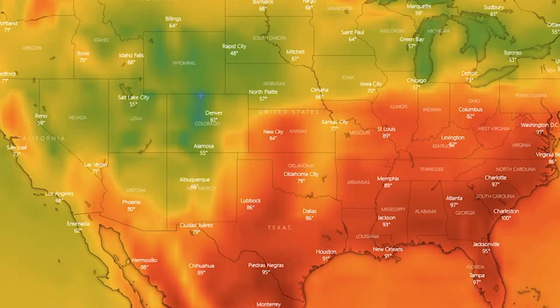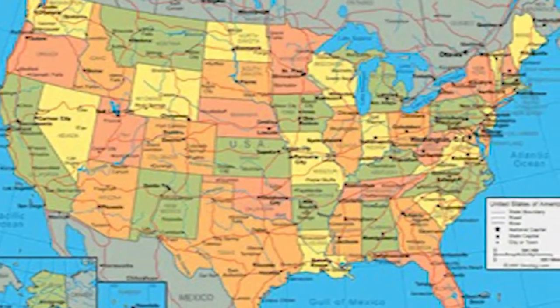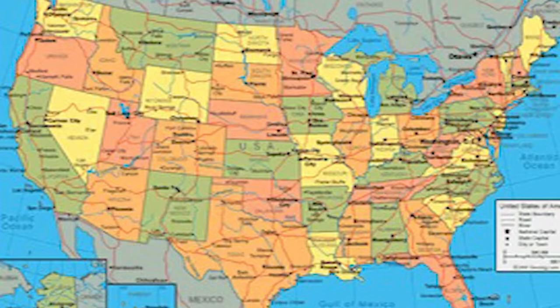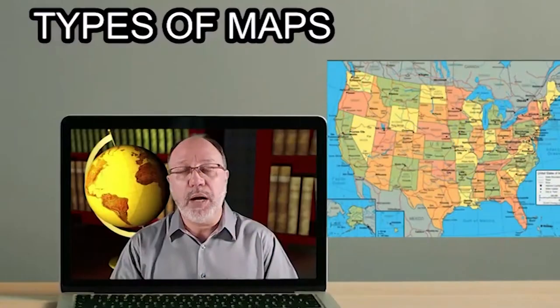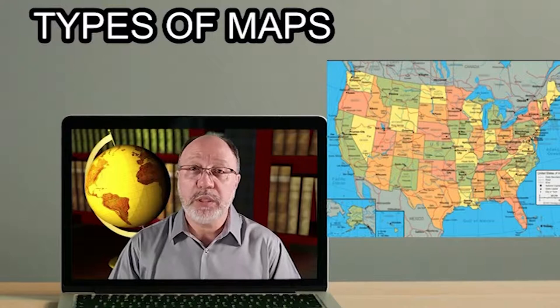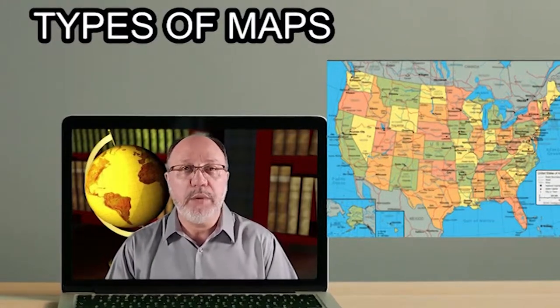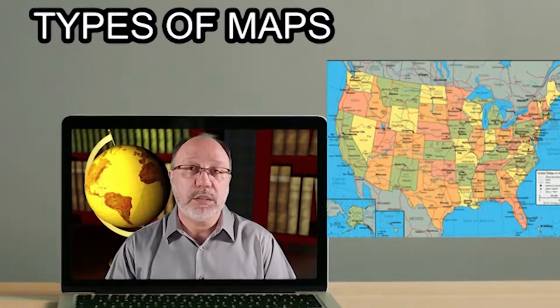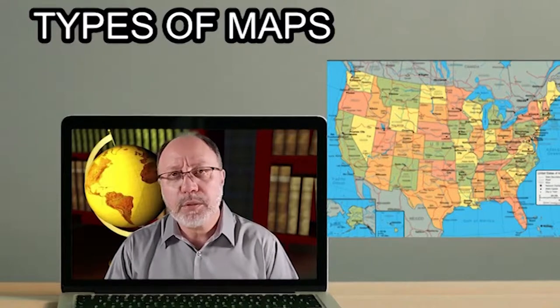One common map is the political map, as you can see here. Political maps are among the most widely used reference maps — they hang on the walls of classrooms around the world. They show the geographic boundaries between governmental units such as countries, states and counties, and also show roads, cities and major water features such as oceans, rivers and lakes.